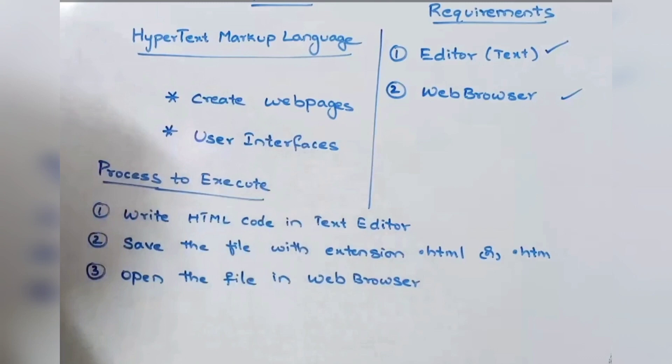Next, what is the process to execute HTML? First, write the HTML code in a text editor. Second, save the file with the extension dot htm or dot html — this indicates that it is a web page. Third, open the file in a web browser. This is the process to execute HTML code.